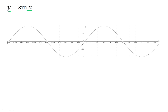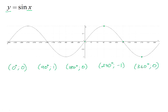At 0 degrees, the sin of 0 degrees is 0, so we have a coordinate at 0 degrees and 0. The graph then has its maximum point at 90 degrees, so we have a point at 90 degrees and positive 1. We have a point at 180 degrees and 0, then at 270 degrees and negative 1, and then at 360 degrees and 0. Connecting all those points with a smooth curve gives us the graph of y equals sin x.